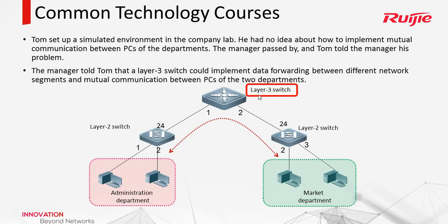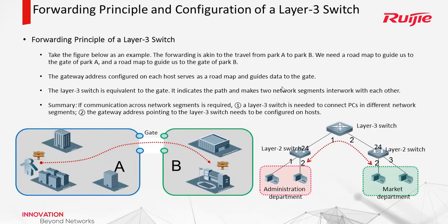This switch should be a layer 3 switch. But how does the layer 3 switch make different VLANs communicate with each other? For example, we can think of these two departments as like two companies. We need to go out of this company, then go into another company. This means we need to get out of this gate, and then get in this gate.